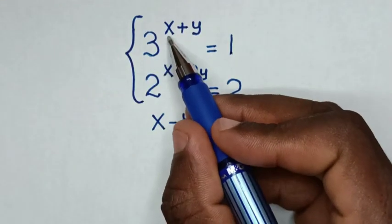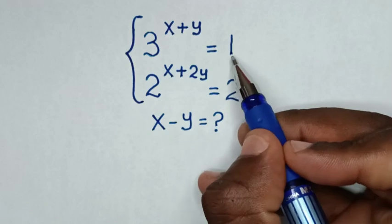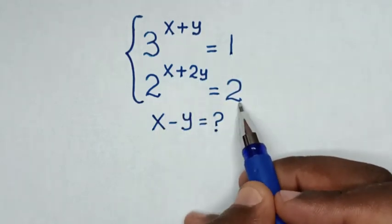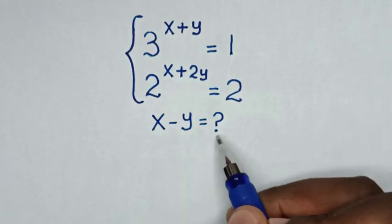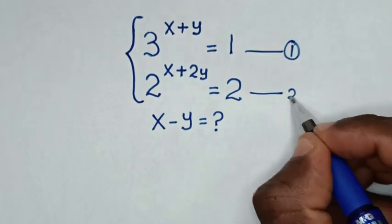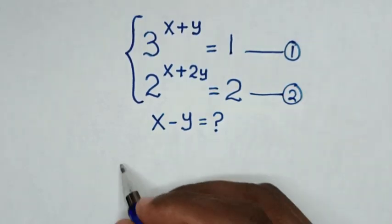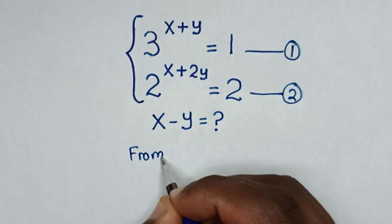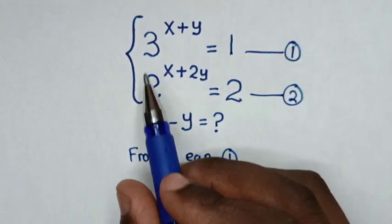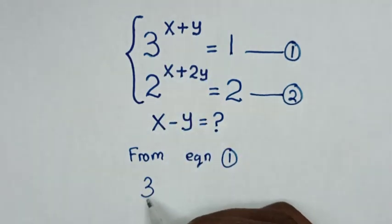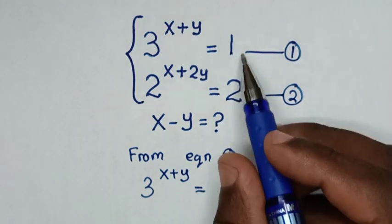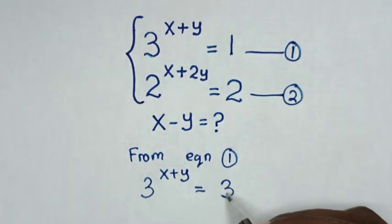How to solve: 3 to the power of (x + y) is equal to 1, and 2 to the power of (x + 2y) is equal to 2, to find the value of x minus y. We let this be Equation 1 and this be Equation 2. From Equation 1, 3 to the power of (x + y) equals 1, which is the same as 3 to the power of 0.